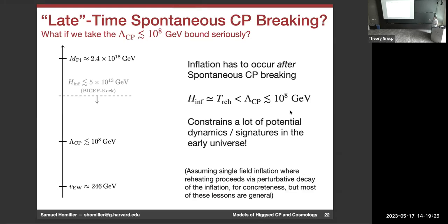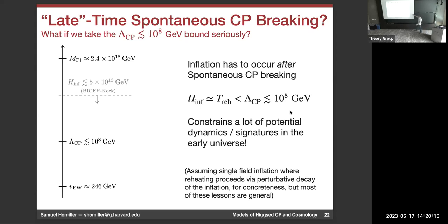Taking the 10^8 GeV bound seriously, it really dictates what can happen cosmologically. It implies the Hubble scale during inflation must be below the CP breaking scale, making the tensor-to-scalar ratio r immeasurably small — we're never going to see primordial gravitational waves. Building models with super-low-scale inflation requires an extremely flat potential — another interesting fine-tuning issue. This rules out a lot of vanilla inflation models.